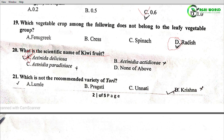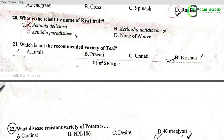Question 21: Which is not the recommended variety of tori (mustard)? Options: Lumle, Pragati, Unnati, Krishna. The correct answer is Option D: Krishna is not the recommended variety of tori.